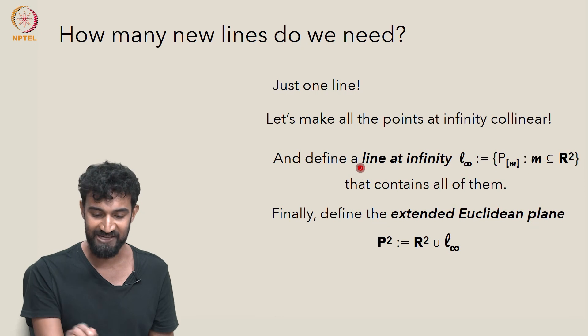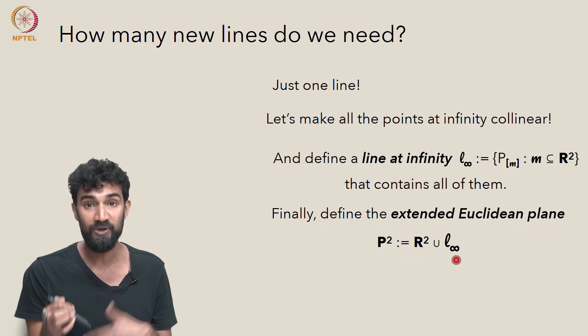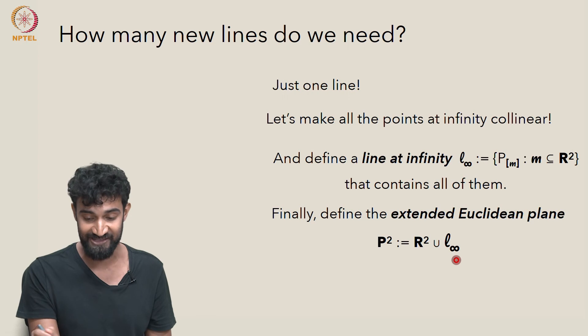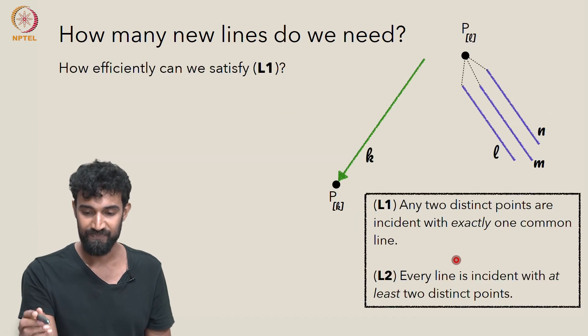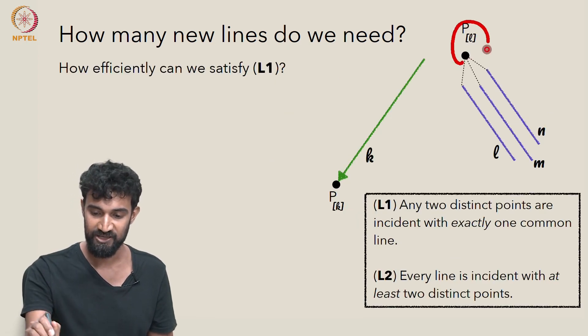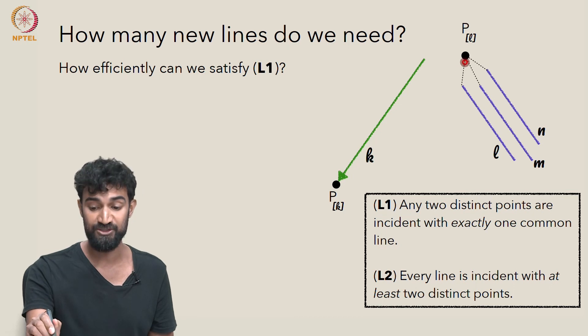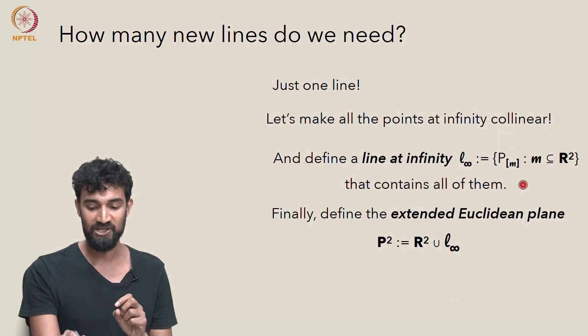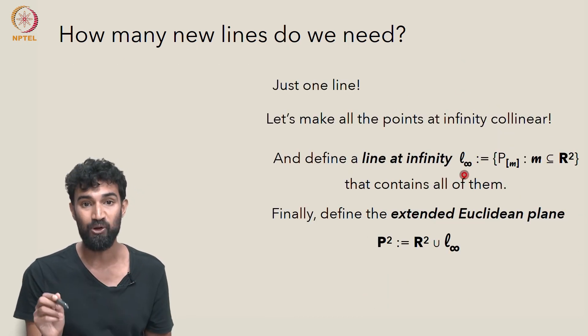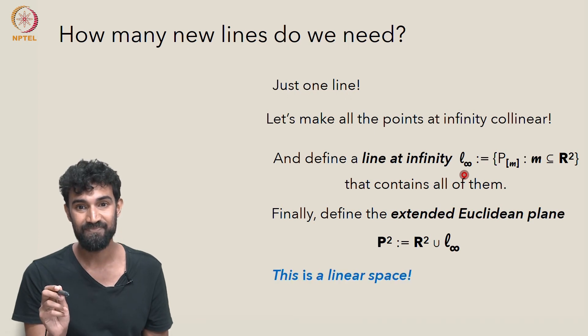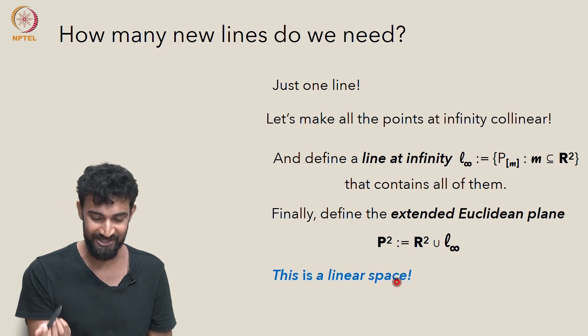Now that we have that, let's define the extended Euclidean plane, which we'll denote P². And it's just defined to be R² union L infinity with all of these incidence relations we've added. That every line will be incident to the point at infinity that's associated to its family. And there's a line at infinity connecting all of the points at infinity. So this is a linear space.